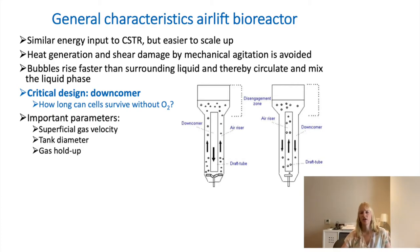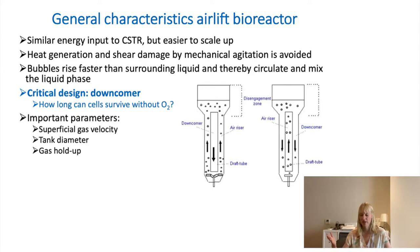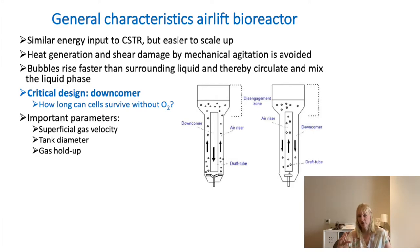Looking at the general characteristics of an airlift reactor: the energy input is traditionally less than a stirred tank reactor, and it is easier to scale up — you've seen examples of towers that were 60 meters high. Because there is no mechanical mixing, airlift reactors work particularly well for cells sensitive to shear stress. In the case of Quorn, filamentous fungi grow really slowly and are aligned in a certain way, making them very sensitive to shear stress, which is why the airlift reactor was a very good fit.